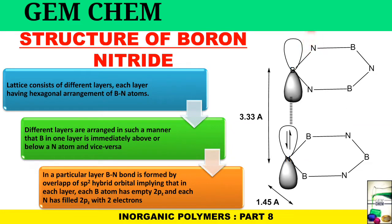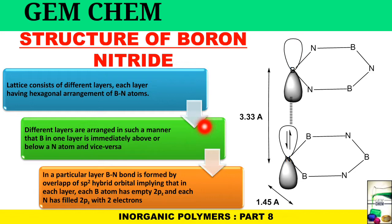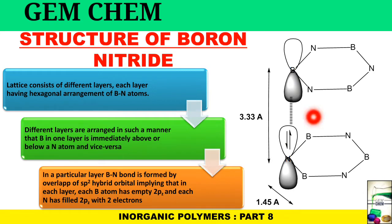Similarly, for each nitrogen there will be one boron above and one boron below. Within a particular layer, the B–N bond is formed by overlap of sp2 hybrid orbitals. This means boron has a vacant 2pz orbital left, while nitrogen has a filled 2p orbital containing two electrons, allowing bonding between adjacent layers. The boron–nitrogen distance within a layer is 1.45 Å, and the distance between two layers is 3.33 Å.